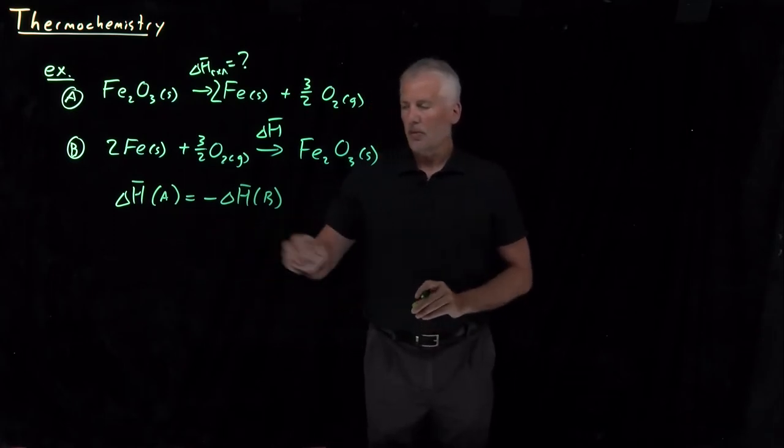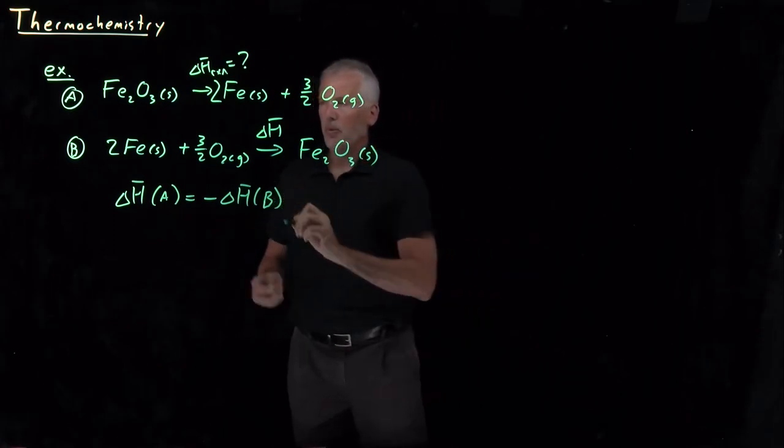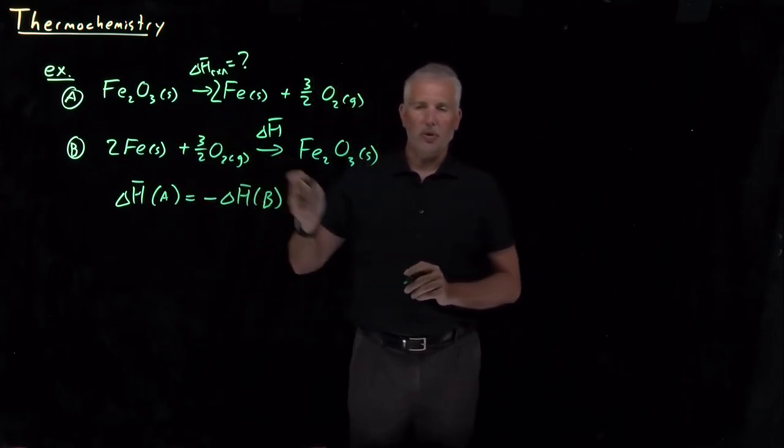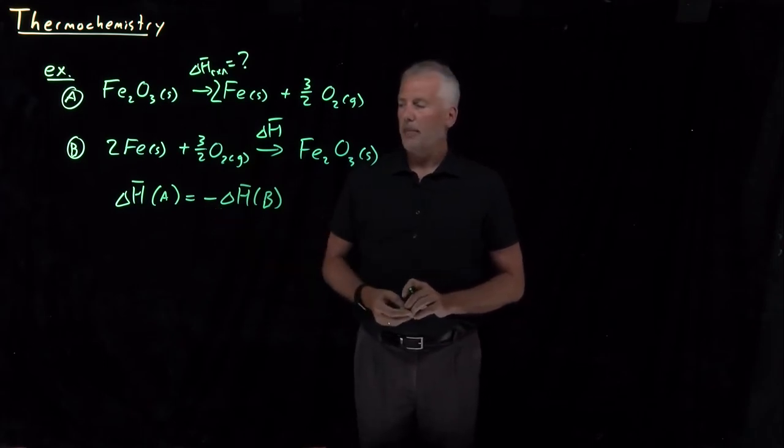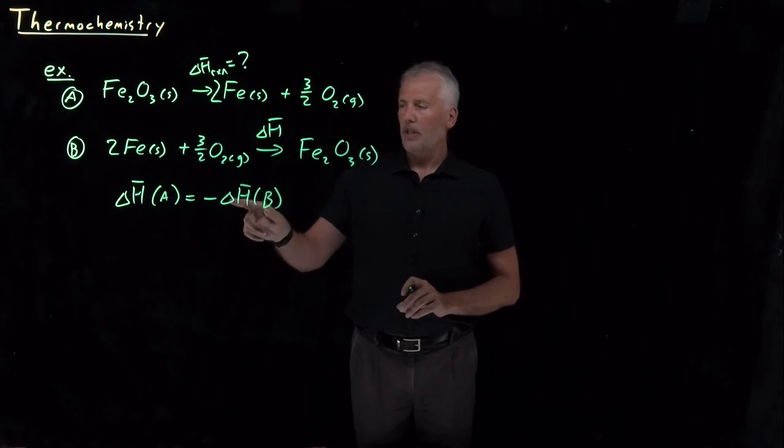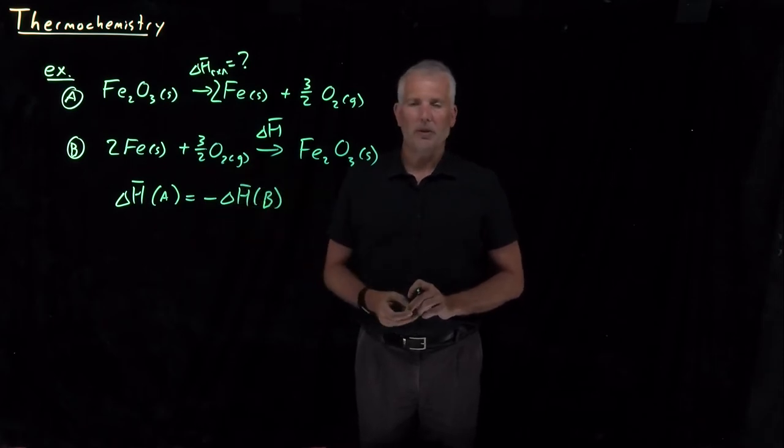That's a relatively simple example. Perhaps we can't do the reaction we're interested in, but we can do the reverse reaction, just throw a negative sign in front of the enthalpy, and that makes us able to use a reaction that we can measure the properties of more easily.